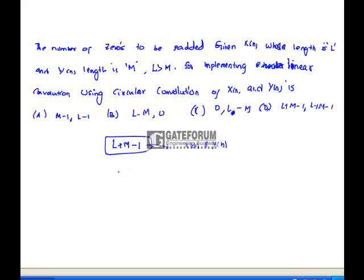So we pad zeros to x(n): the number of zeros is (L + M − 1) − L = M − 1. The number of zeros to be padded to y(n) is (L + M − 1) − M = L − 1. So option A is correct.